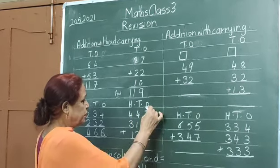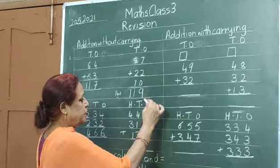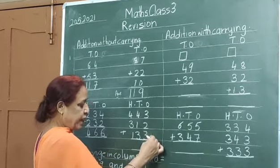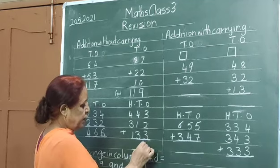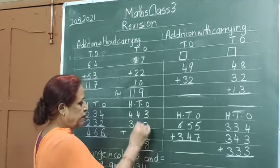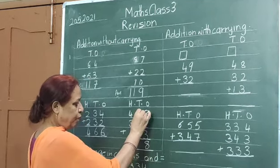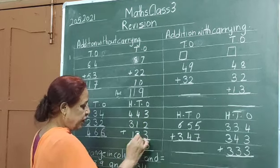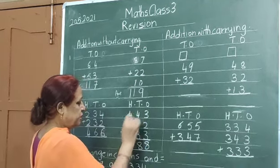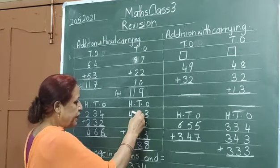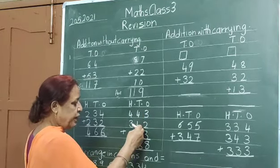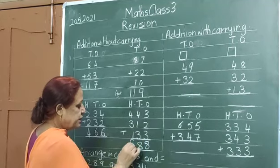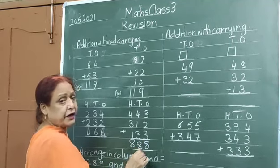Here sums in 3 steps. 3 plus 2 is 5. 5 plus 3 is 8. 4 plus 1 is 5. 5 plus 3 is 8. 4 plus 3 is 7, and 1 is 8. Answer is 888.